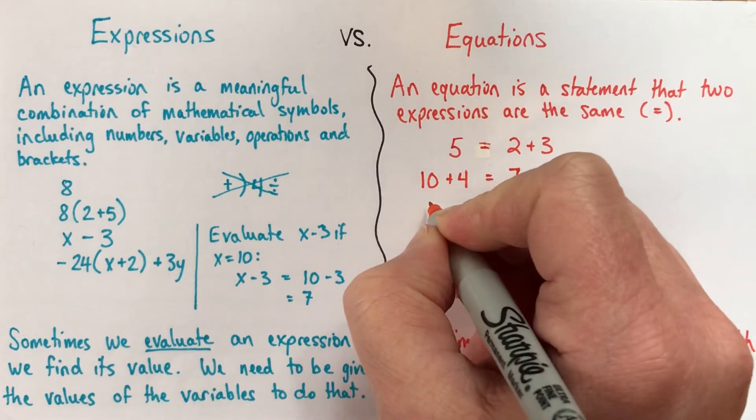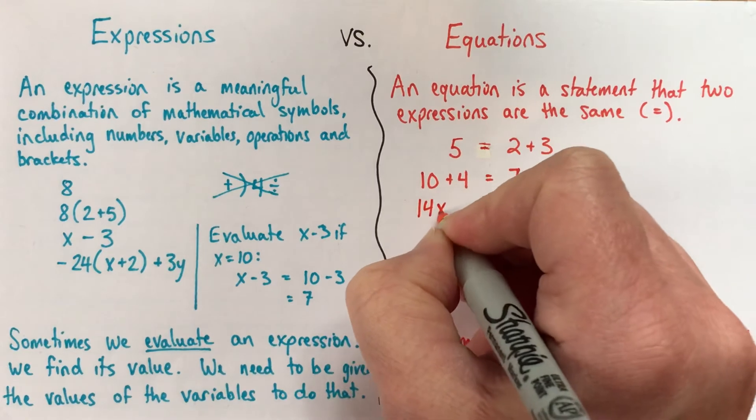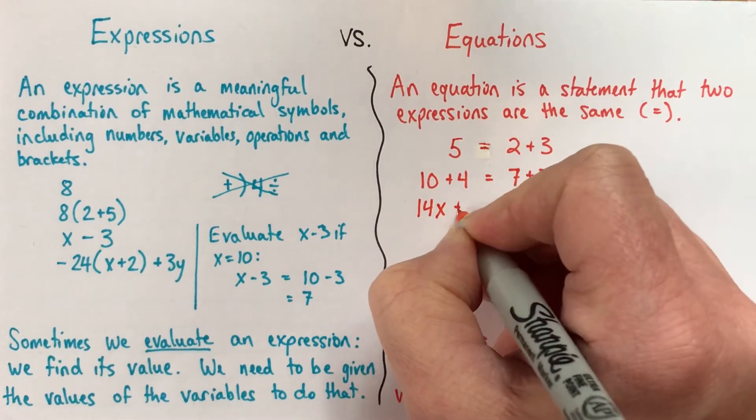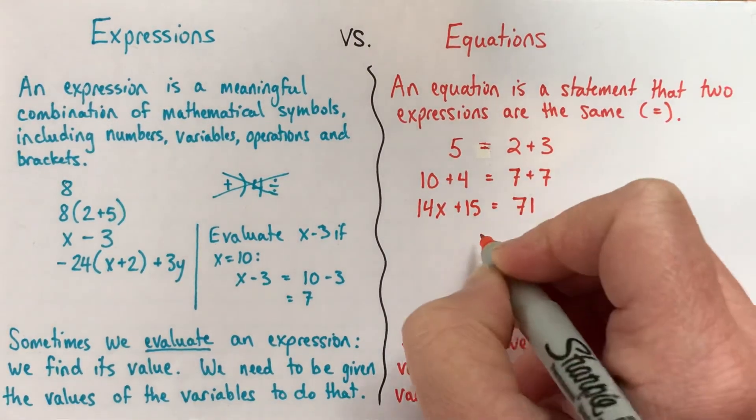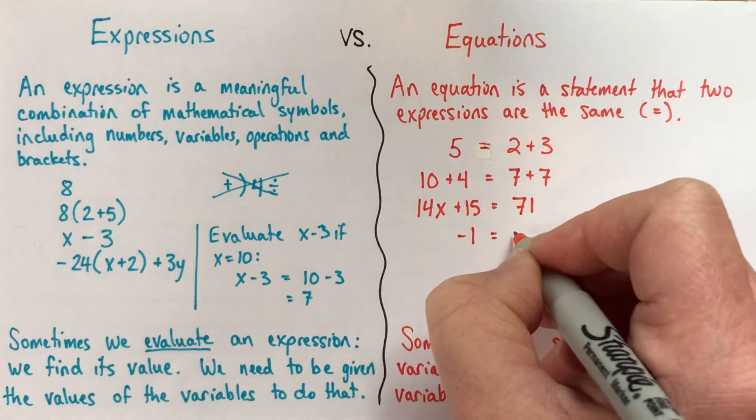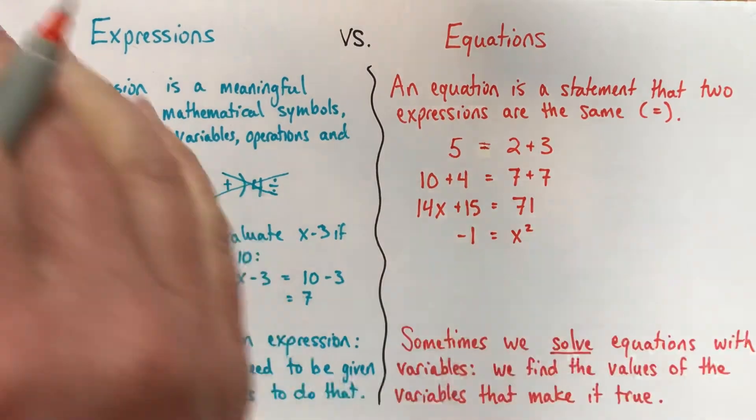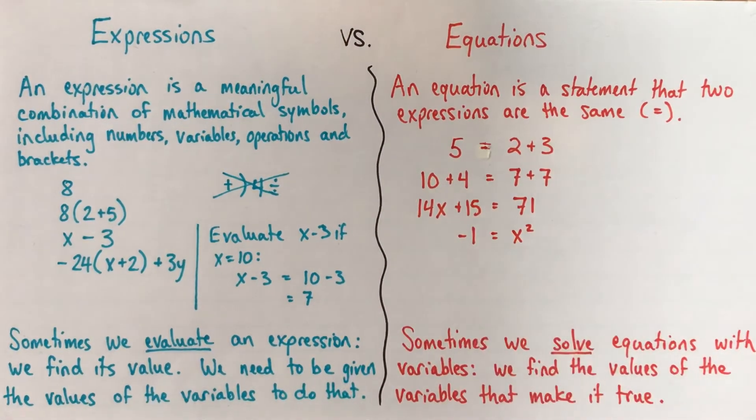Now we often talk about equations with variables in them. So here's one with variables, 14x plus 15 is equal to 71. And you can have this one here. This is a really interesting equation here. Negative 1 equals x squared. There's all sorts of interesting stuff to say about that. So here are some examples of equations.